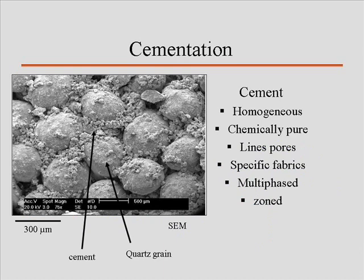What do these cements look like? Just a reminder of the characteristics: cements tend to be homogeneous and chemically pure. They line pores, meaning they fill in the void spaces. They have specific fabrics, which I'm going to show you more of in a few minutes, and they can be multi-phased and zoned. I'll show you some pictures of what these cements look like.